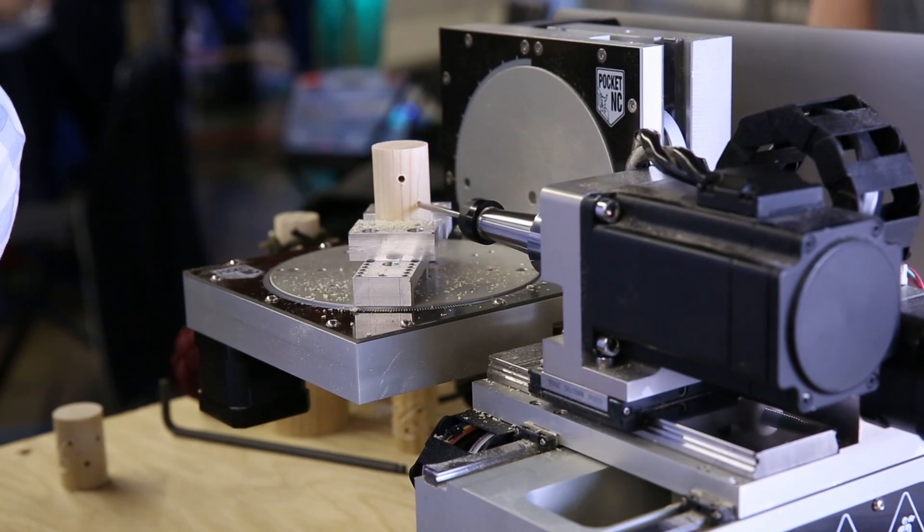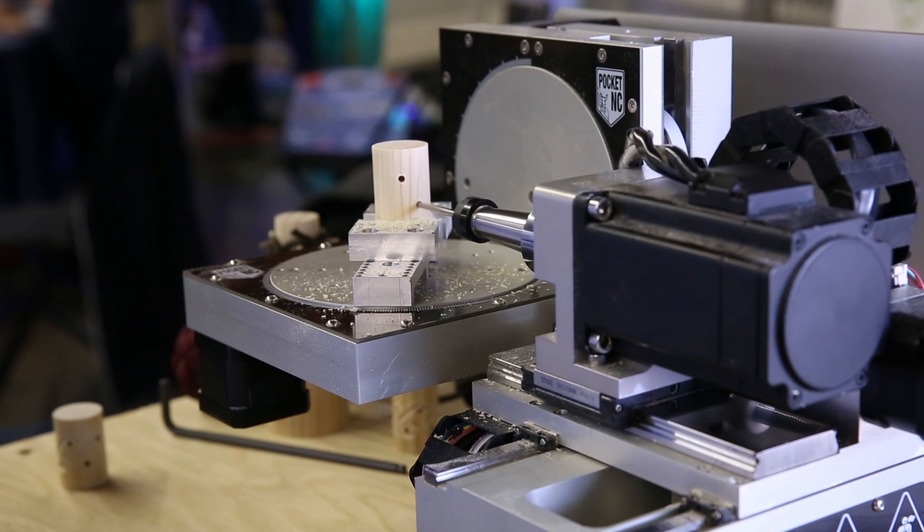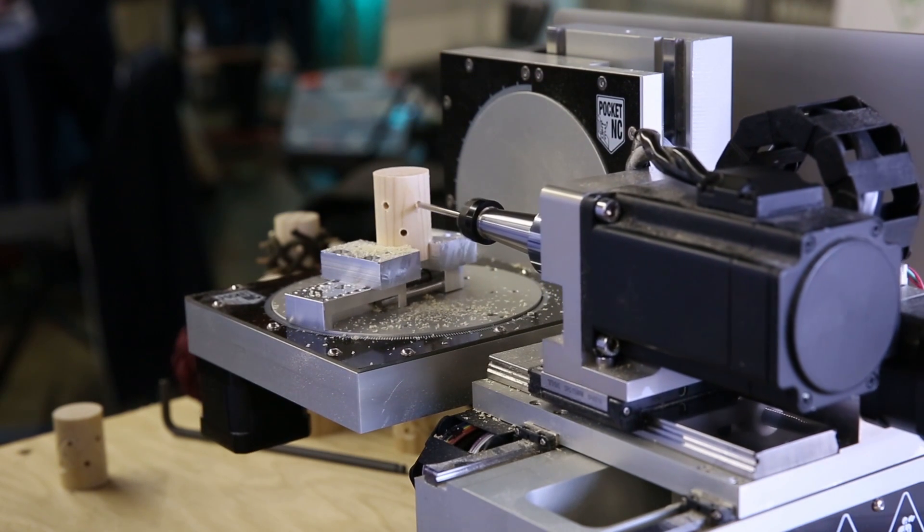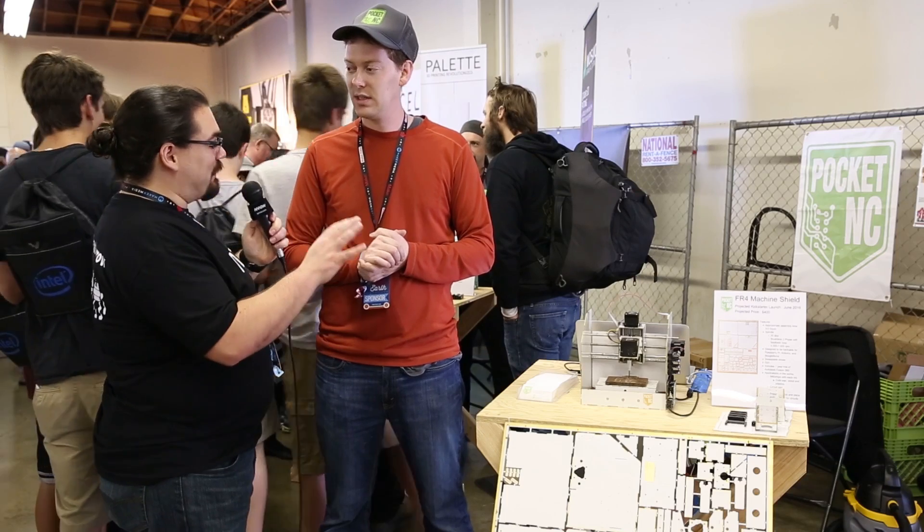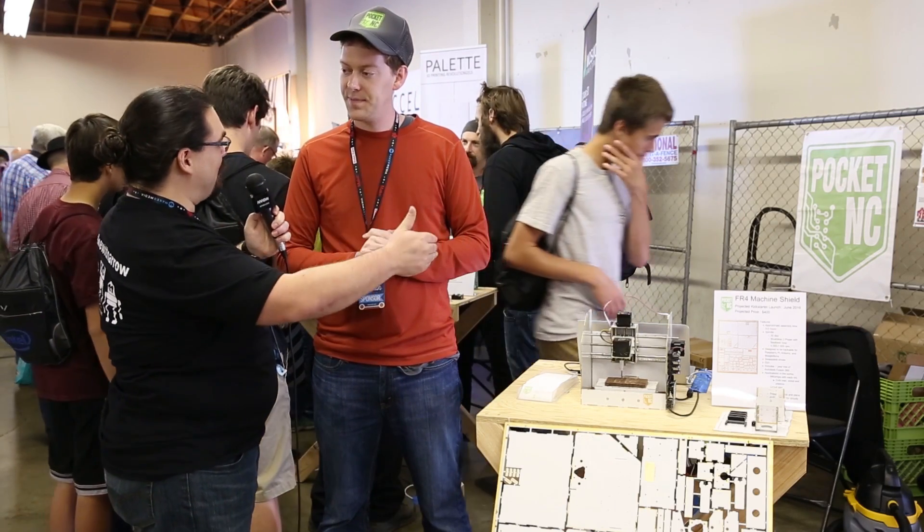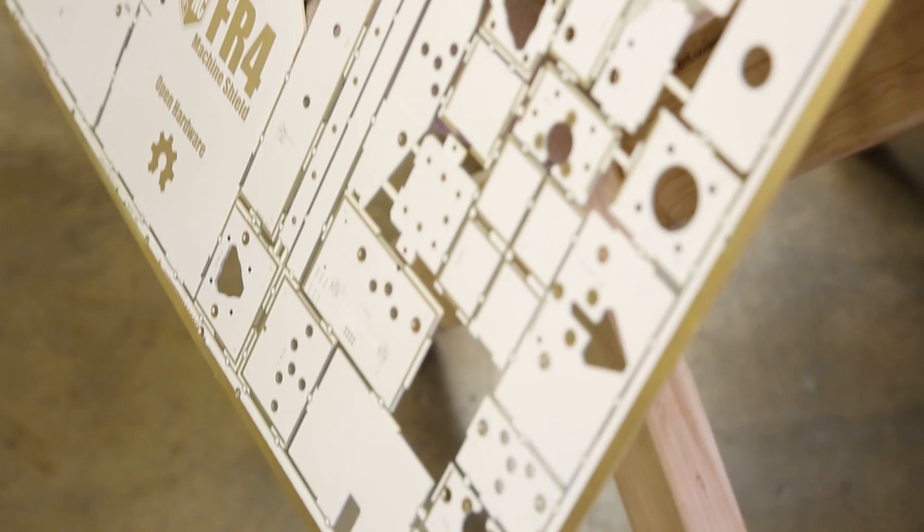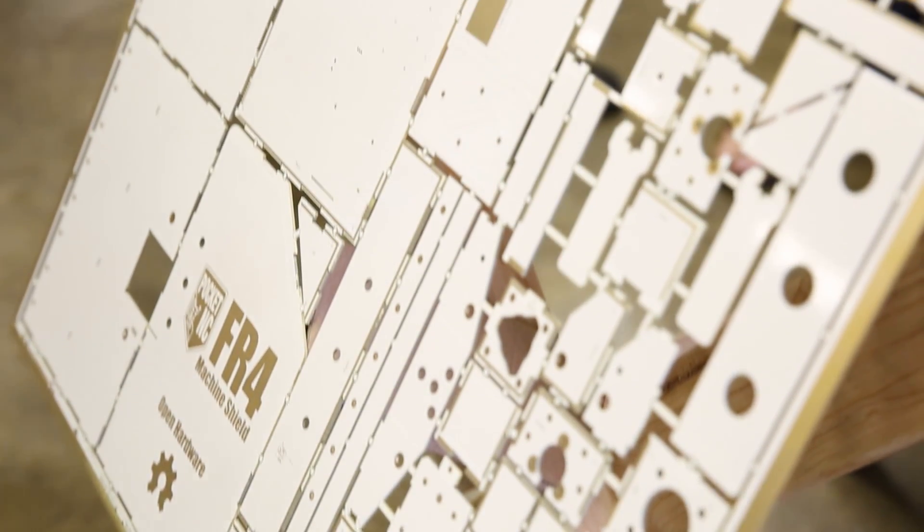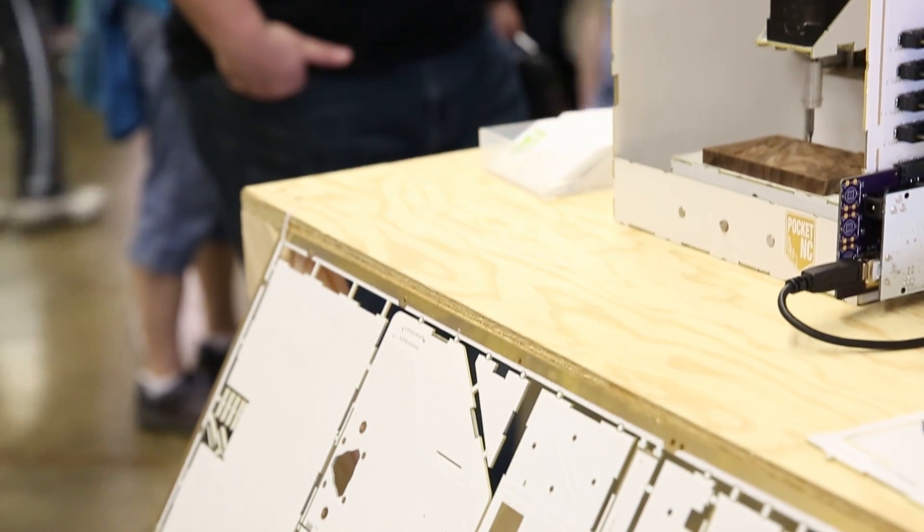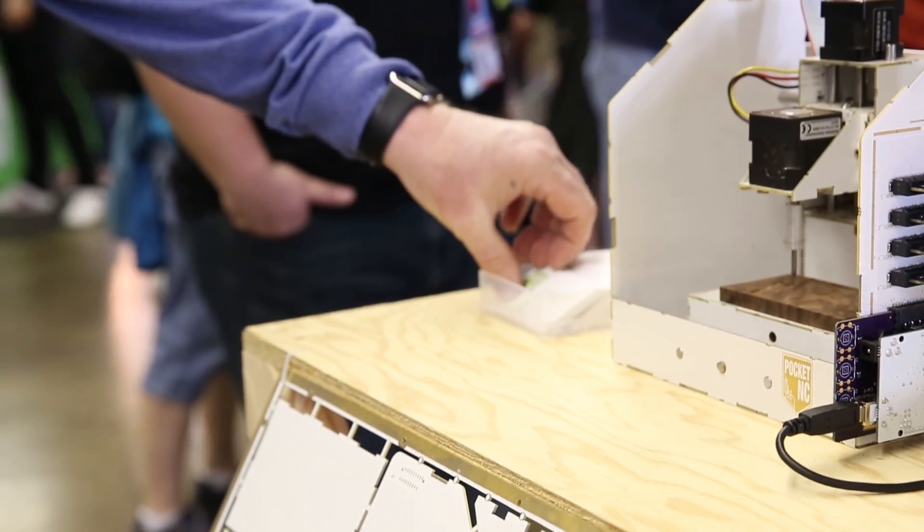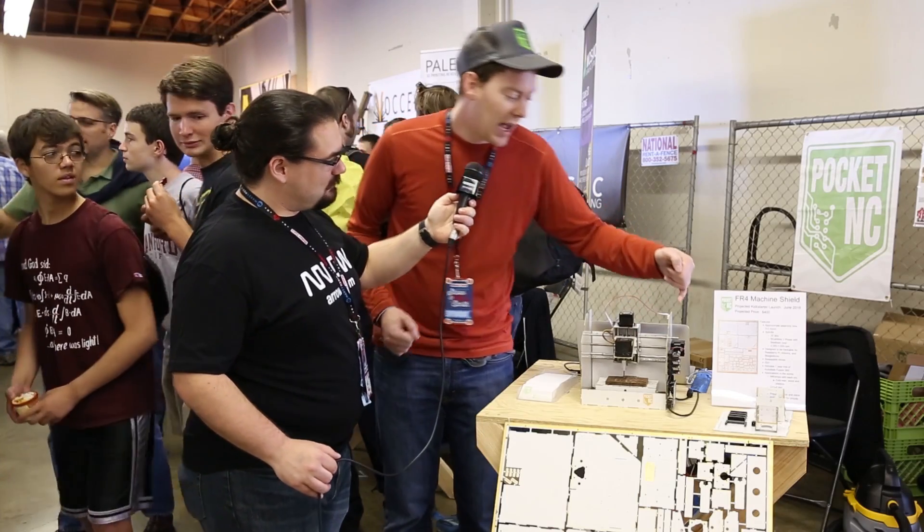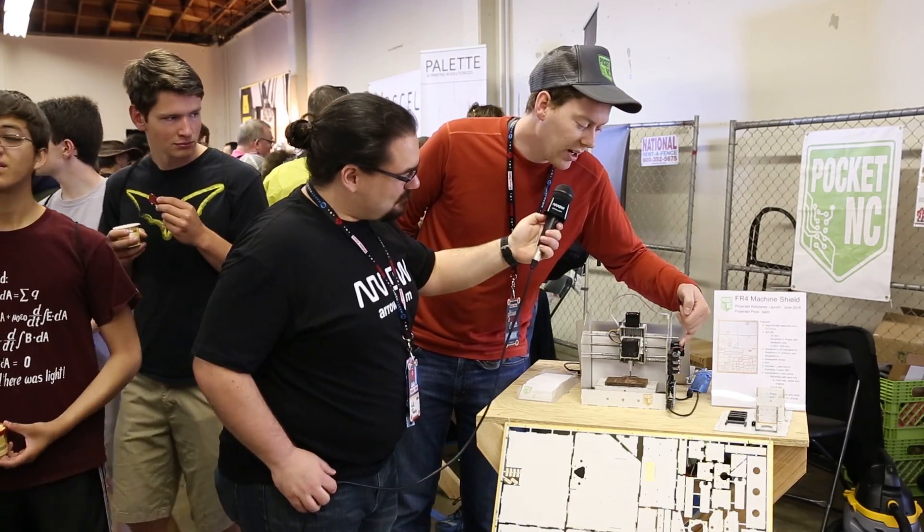It makes it a great tool for people who want to have it in an environment where there's other people around. You were showing me just earlier here on the FR4 Machine Shield, on the other side there are your driver ICs for your three-phase motor, and they're pushing 2 amps. The brushless three-phase motor right there is a 2-amp motor.